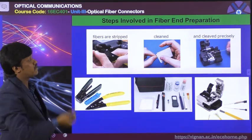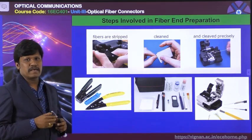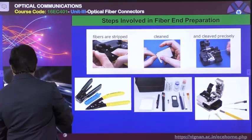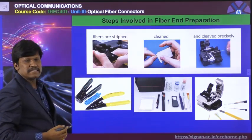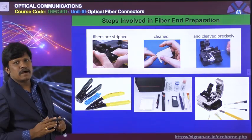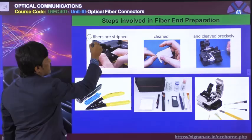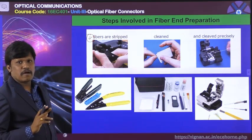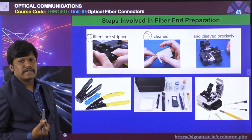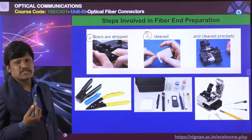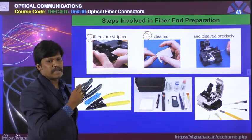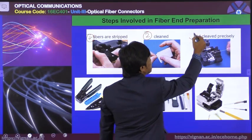Preparation of fiber ends involves the following steps. First, we need to strip the fibers — that is, removing the sleeve or coating of the optical fiber cable. After removing the coating, we need to clean the fiber with some chemicals like acetone or isopropyl alcohol. Then, we need to cleave the fiber precisely.